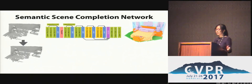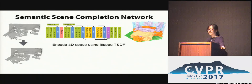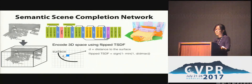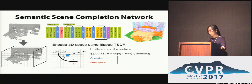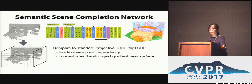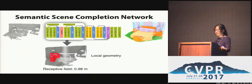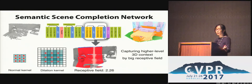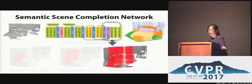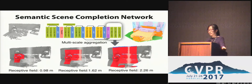Given a 3D space, we encode the geometry using a flipped truncated signed distance function (FTSDF). For each voxel in space, we compute the distance to the closest surface, where the flipped TSDF equals one minus the normalized distance value, and the sign indicates whether the voxel is in occluded space or free space. Compared to the standard TSDF used in reconstruction pipelines like KinectFusion, this encoding has less viewpoint dependency and concentrates the strongest gradient on the surface. We then feed this 3D volume to SSCNet, increasing the receptive field using 3D dilated convolution, which uses spatially spread convolutional kernels to effectively increase the receptive field without extra parameters. Network responses from different scales are aggregated to predict the final voxel labels.